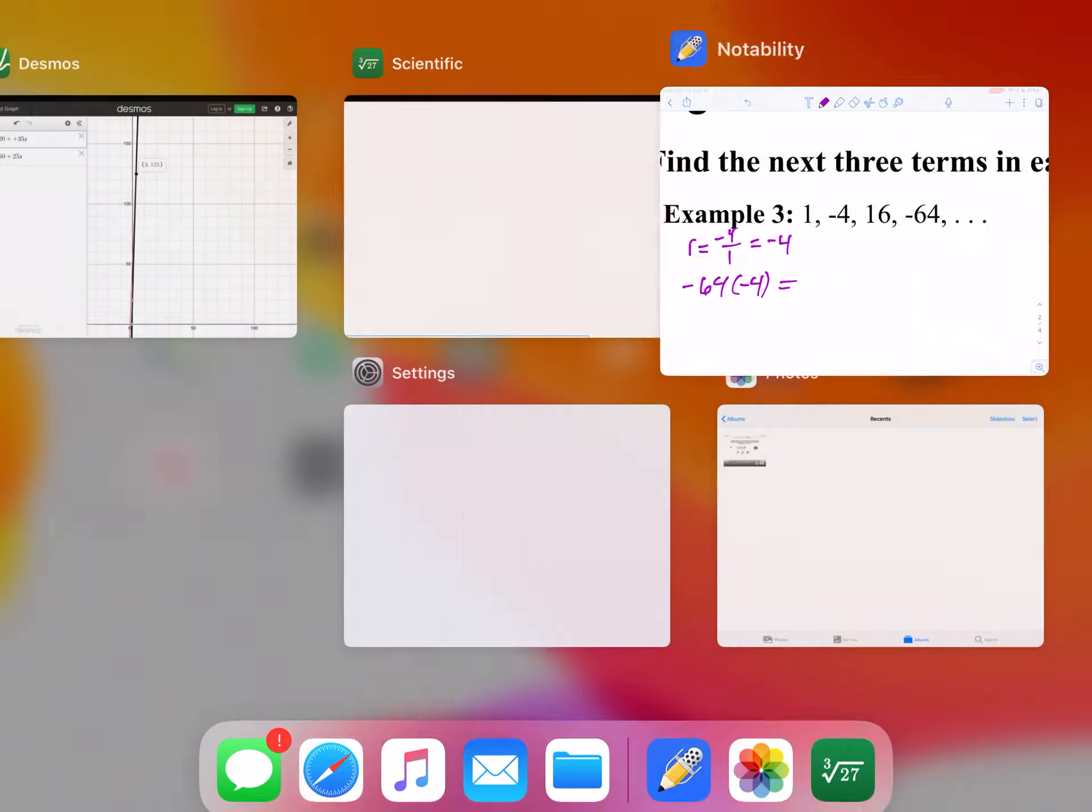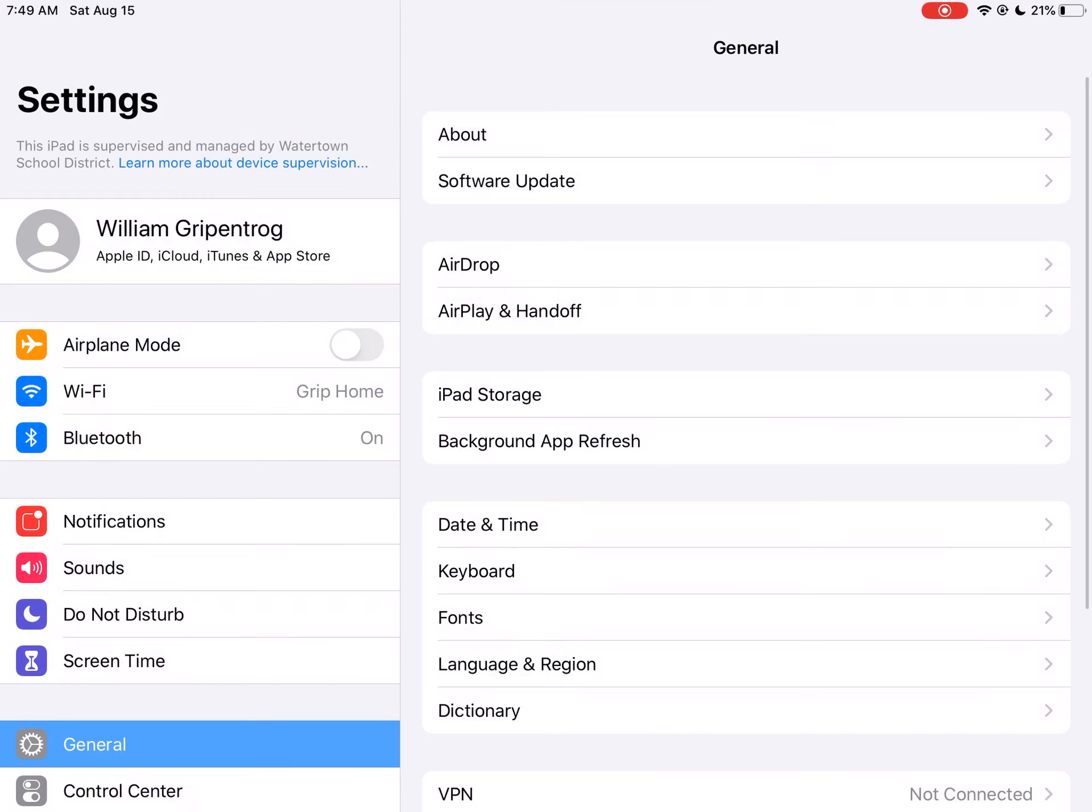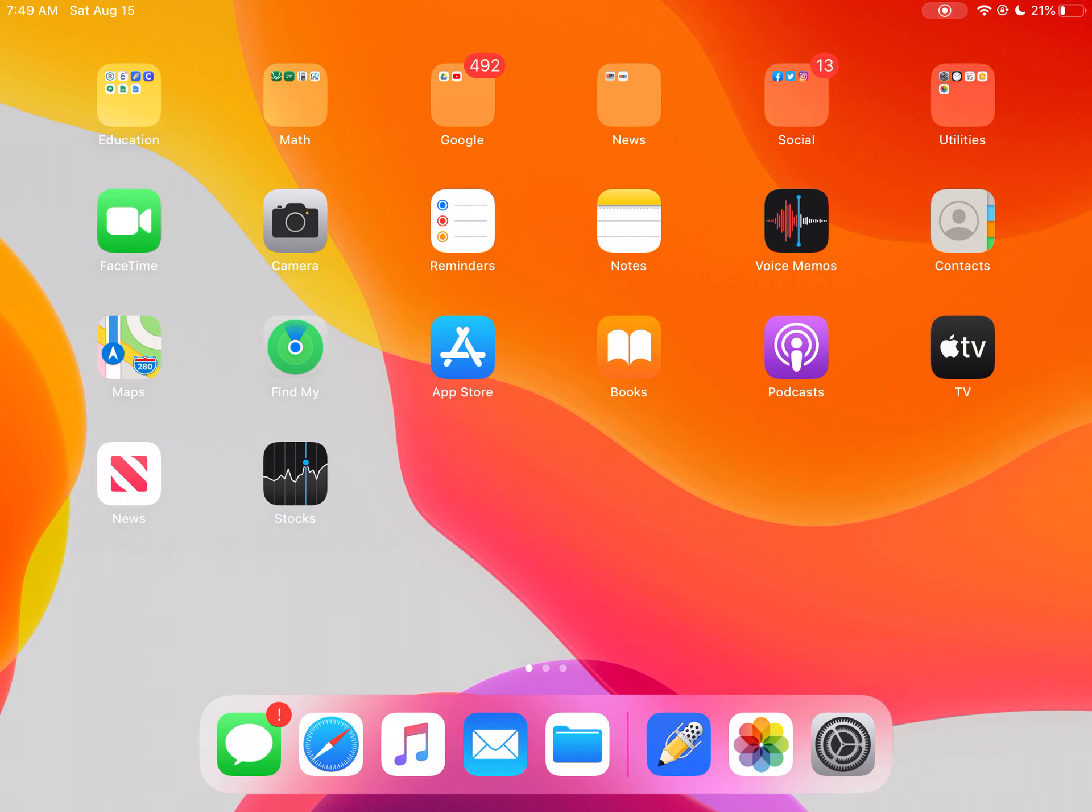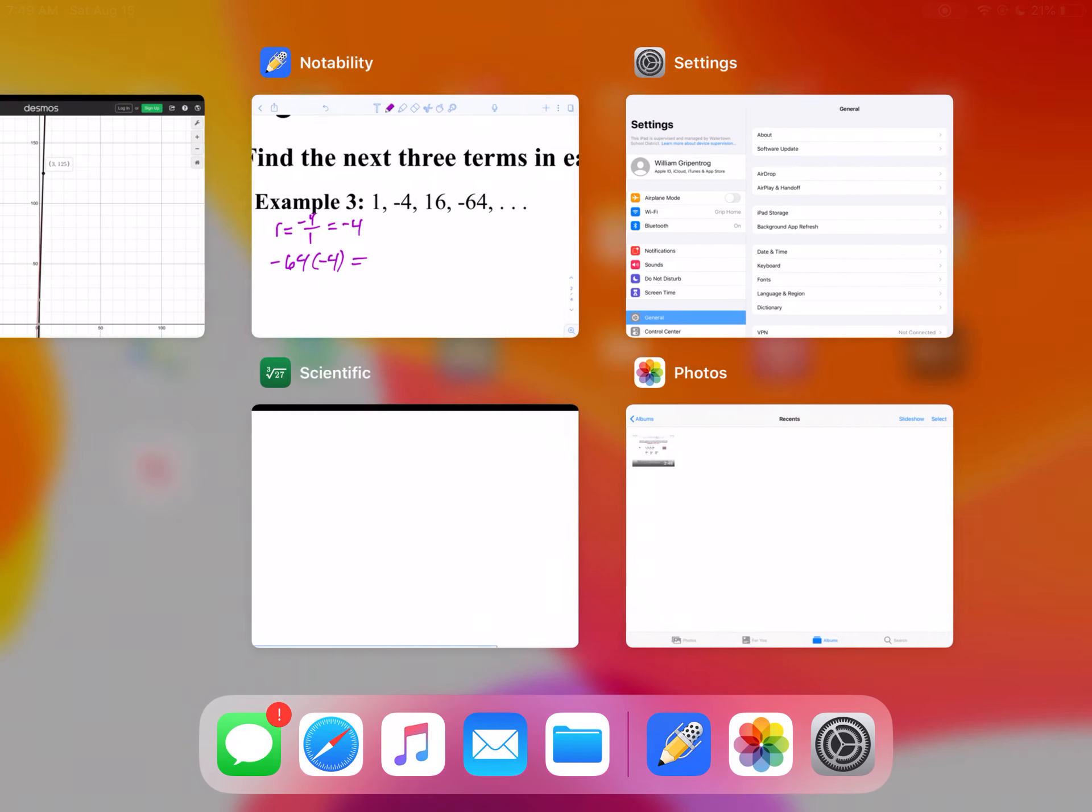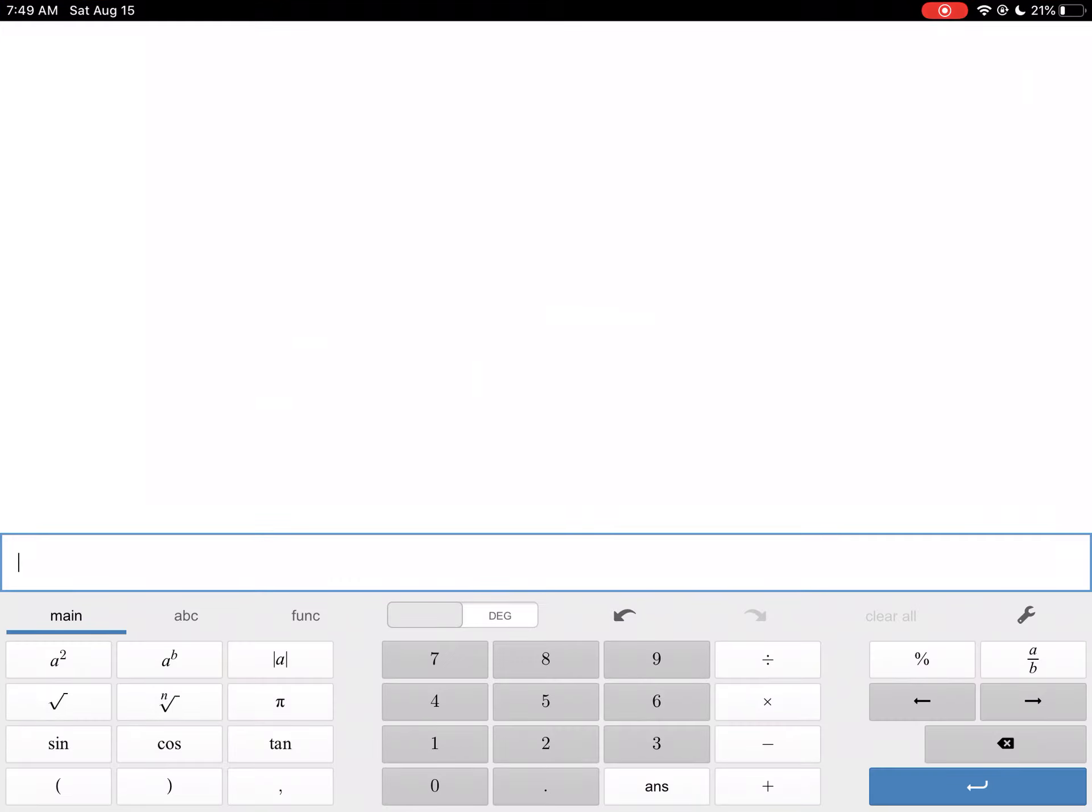I think we'll use a calculator here. So if I take 64 times four, I'm going to get 256.